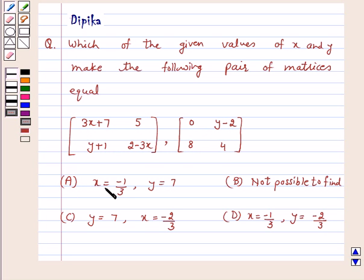Options are A: x is equal to minus 1 by 3, y is equal to 7. B: not possible to find. C: y is equal to 7, x is equal to minus 2 by 3. D: x is equal to minus 1 by 3 and y is equal to minus 2 by 3.